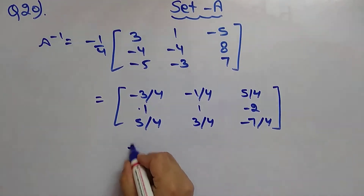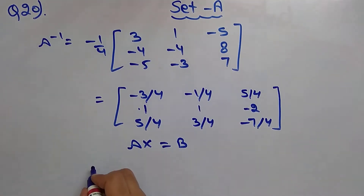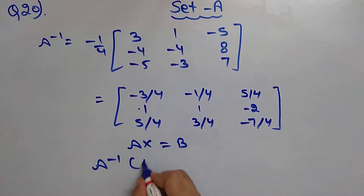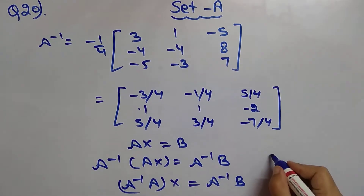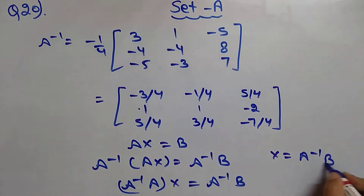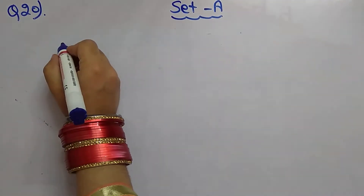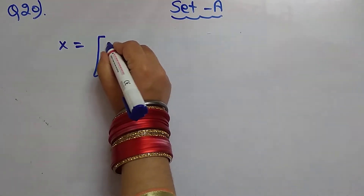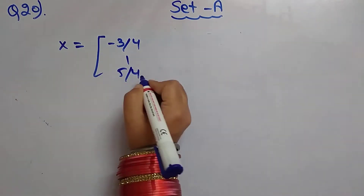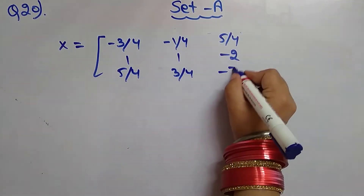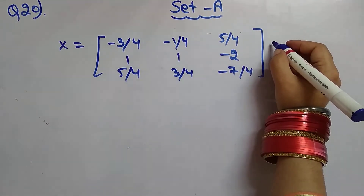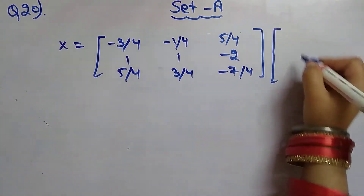Since AX equals B, we multiply both sides by A inverse: A inverse times A times X equals A inverse times B, which simplifies to X equals A inverse times B. Substituting the values, X equals [-3/4, 1, 5/4; -1/4, 1, 3/4; 5/4, -2, -7/4] multiplied by [-5, 8, 1].